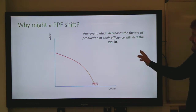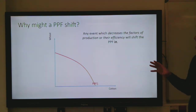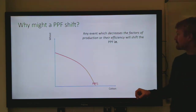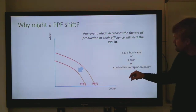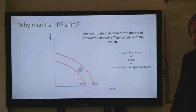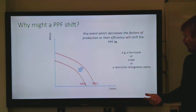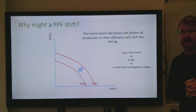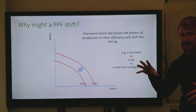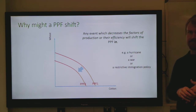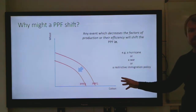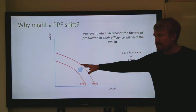A new type of tractor that increases the efficiency of both wheat and cotton farms — that type of capital resource would make you more efficient in producing either one of those goods, so at any given point you can produce more and it shifts your PPF out. It could also shift inward if you have an event which decreases the factors of production or their efficiency. For example, a hurricane, a war, or a restricted immigration policy can all shift your PPF inwards, leading you to produce less of those two goods when maximizing output.